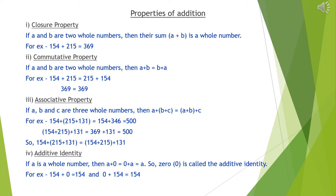Properties of addition. First, closure property. It states that if a and b are two whole numbers, then their sum a plus b is also a whole number. For example, 154 plus 215 is equal to 369. Here, 154 and 215 both are whole numbers, and their sum 369 is also a whole number. This property is satisfied with all whole numbers.